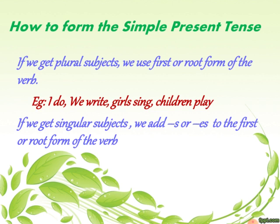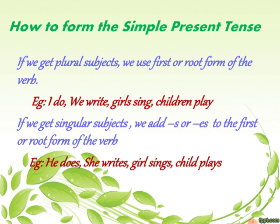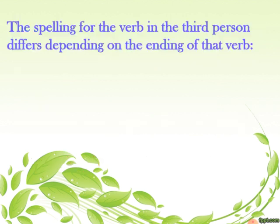But when you get a singular subject, we add s or es to the root form of the verb. For example: he does, she writes, girl sings, child plays. Remember this rule: if you get a plural subject, no change in the verb; if you get a singular subject, you add s or es.